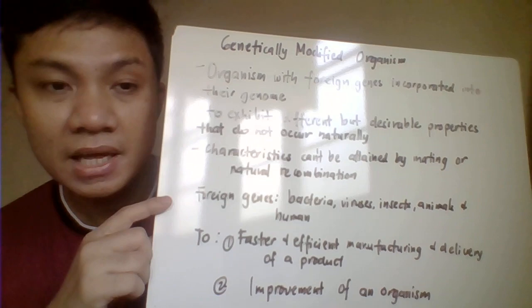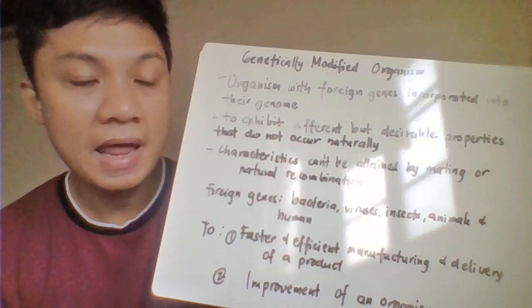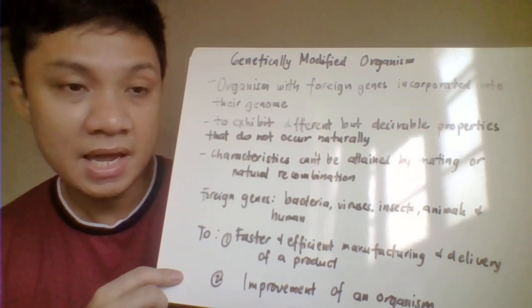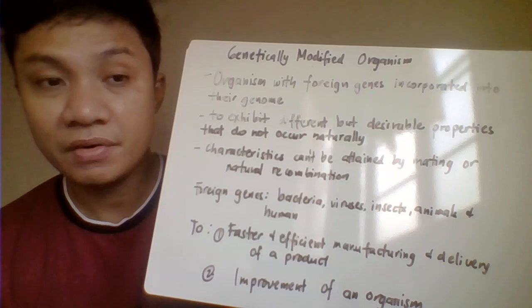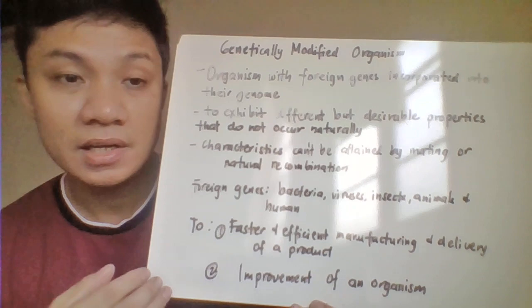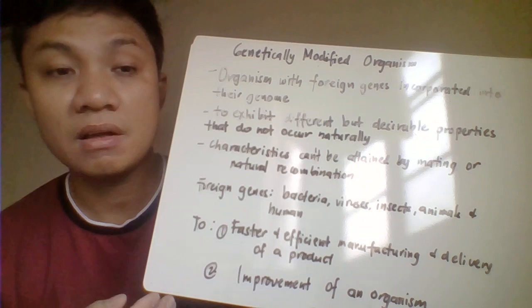Where do you get the foreign DNA? You can get it from other organisms — it might be a bacteria, a virus, a parasite, other plants, animals, or even humans. One reason for doing genetic recombination is to have faster and more efficient delivery of a particular product. Those genes would dictate the production of that product at a faster rate than the usual reproduction process if you relied only on natural means. All you need to do is insert a foreign DNA and it will produce your particular product at a faster rate.